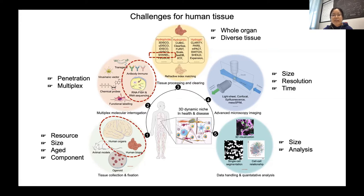About the labeling step, we need to consider whether antibodies or DNA probes can penetrate homogeneously into the whole tissue block, and if we are interested in several markers, how to distribute those markers across different fluorescence channels. Today I will focus on how we developed the CHANEL tissue clearing method and how we try to address all of these challenges.